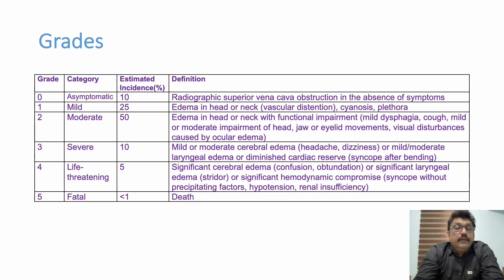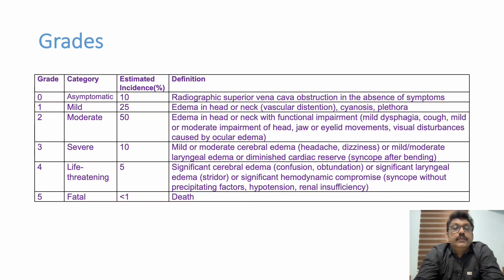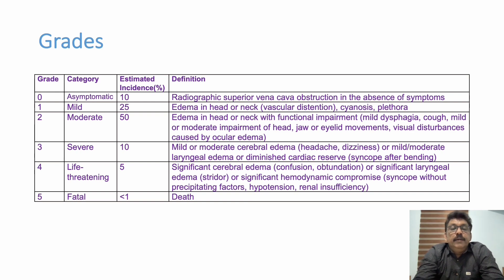There are different grades of SVC obstruction. Grade 0 is asymptomatic — only chest X-ray shows mediastinal widening with no symptoms. Grade 1 is mild edema in the neck and head due to distension of the jugular veins, with cyanosis and a plethoric appearance. Grade 2 is moderate, with edema in head and neck causing functional impairment — mild dyspnea, cough, mild or moderate impairment of head, jaw, and eyelid movements, and visual disturbances due to ocular edema.